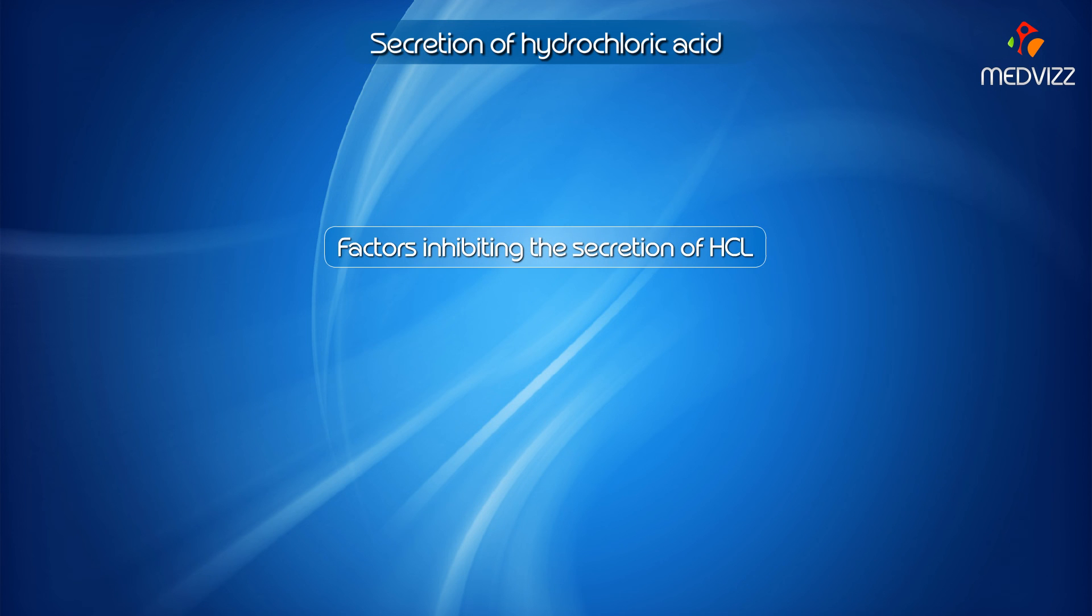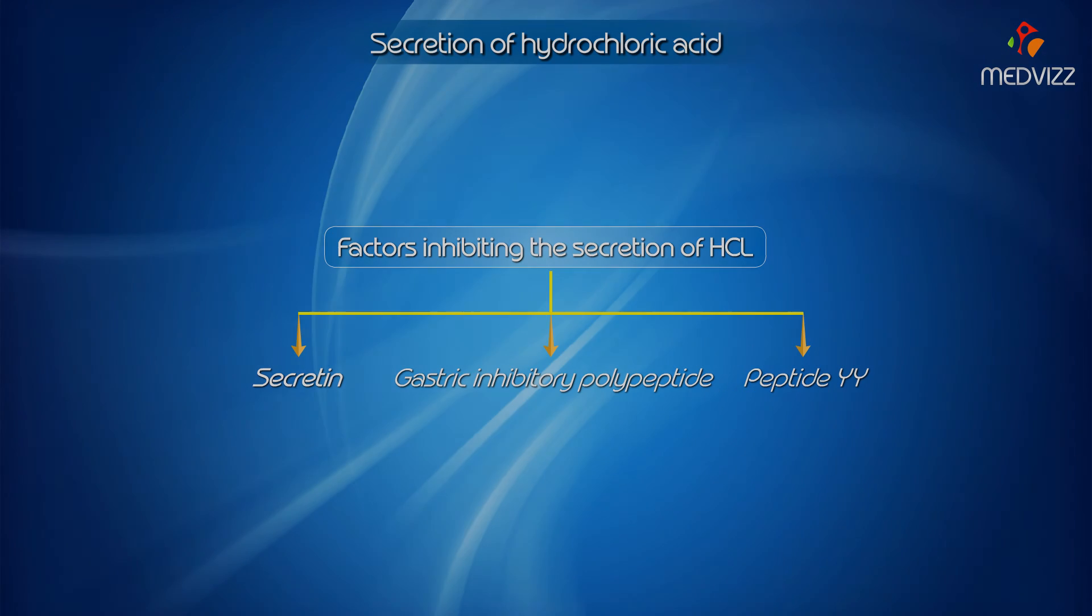Factors inhibiting the secretion of hydrochloric acid are secretin, gastric inhibitory polypeptide, and peptide Y.